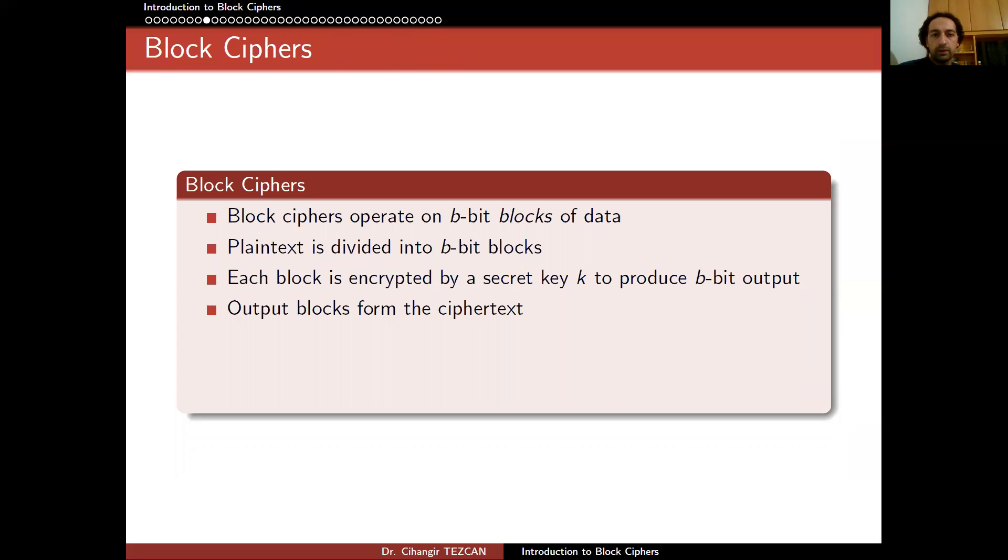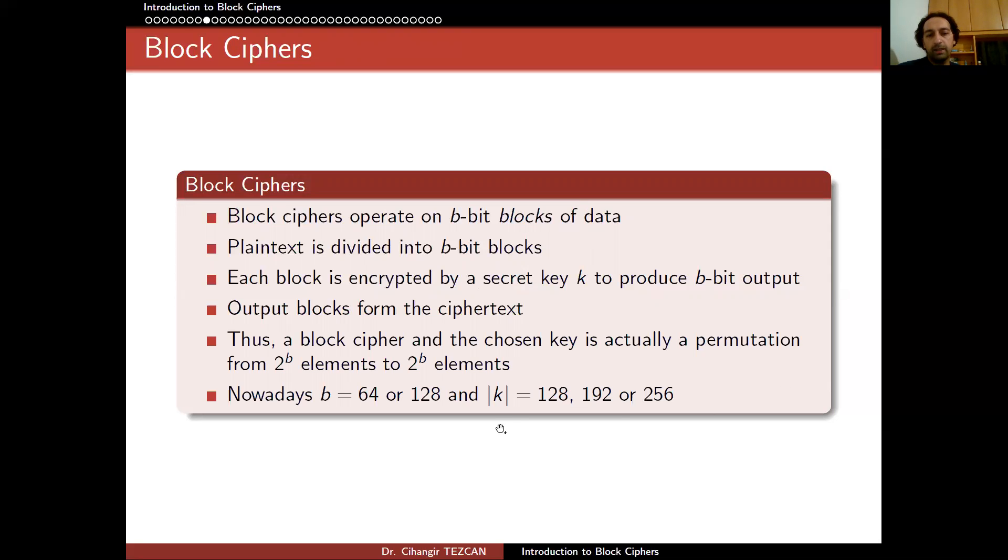So instead of trying to design an algorithm that works on many different input sizes, block ciphers just focus on fixed input length and provide the same fixed output length. So this way, regardless of the size of the plaintext, for instance, you can encrypt a file on your computer that can be a few bytes, a few kilobytes, or a few gigabytes, it doesn't matter. Block cipher will be working on b-bit blocks of data. And in practice, most of the ciphers we have use b as 64 bits or 128 bits. So most of the time we are encrypting eight bytes or 16 bytes at a time.